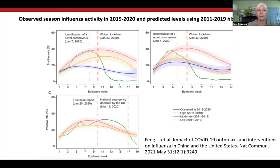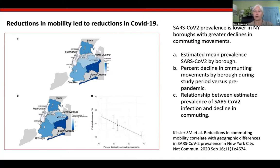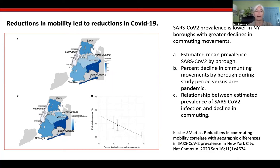There's also evidence that COVID, also transmitted through the aerosol route, reached higher incidence in areas with higher mobility. This is a study from my colleague at the Harvard School of Public Health, Yonatan Grad, which shows that in New York City, areas with higher SARS-CoV-2 prevalence, in panel A, were also those with higher levels of mobility, shown in panel B. The graph in C shows that this relationship is linear.